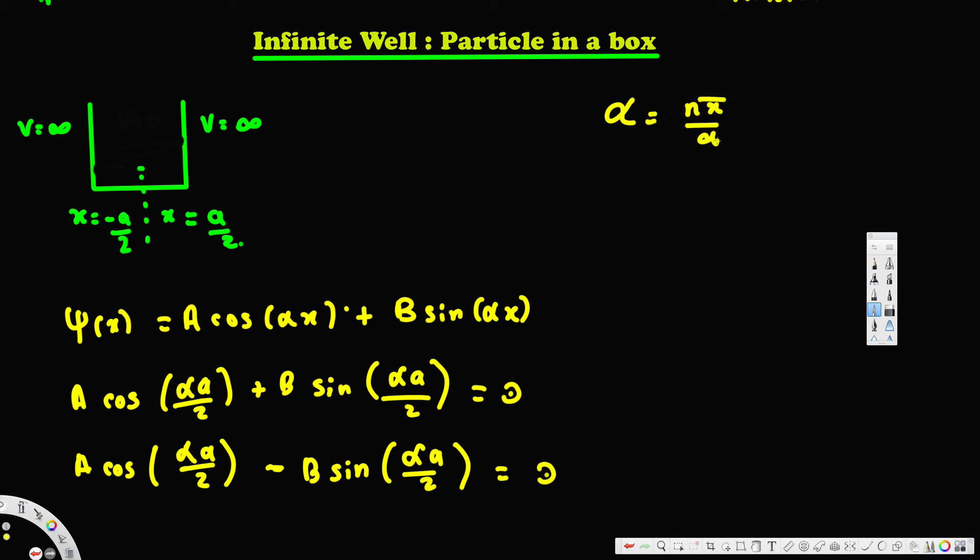From this one we can derive our energy level equation that is given by E_n = n²π²ℏ² / (2ma²).